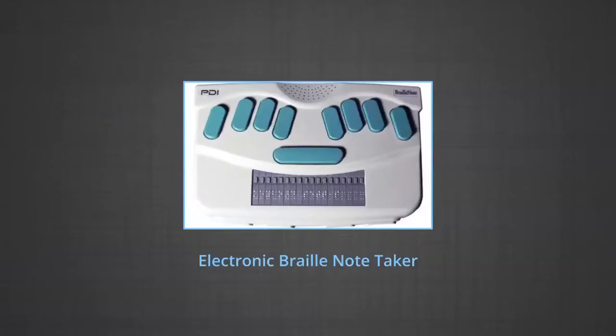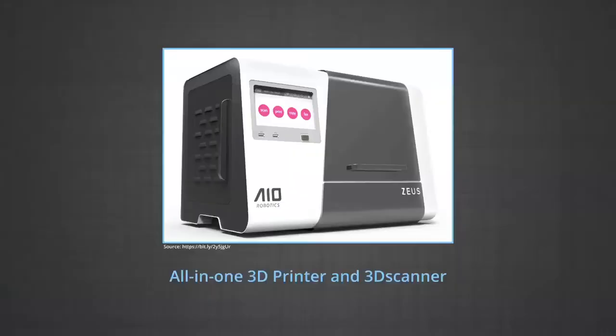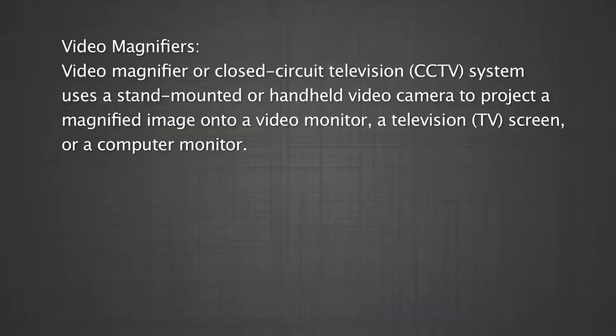Electronic Braille note-taker: Small portable devices with Braille keyboards for entering information, using a speech synthesizer or Braille display for output. Braille display technology: These devices operate by raising and lowering different combinations of pins electronically to produce in Braille what appears on a portion of the computer screen. Stand-alone scanners: All-in-one 3D printers with integrated computer touch screens and 3D scanners. Video magnifiers: A closed-circuit television uses a stand-mounted or handheld video camera to project magnified images onto a video monitor, television screen, or computer monitor.